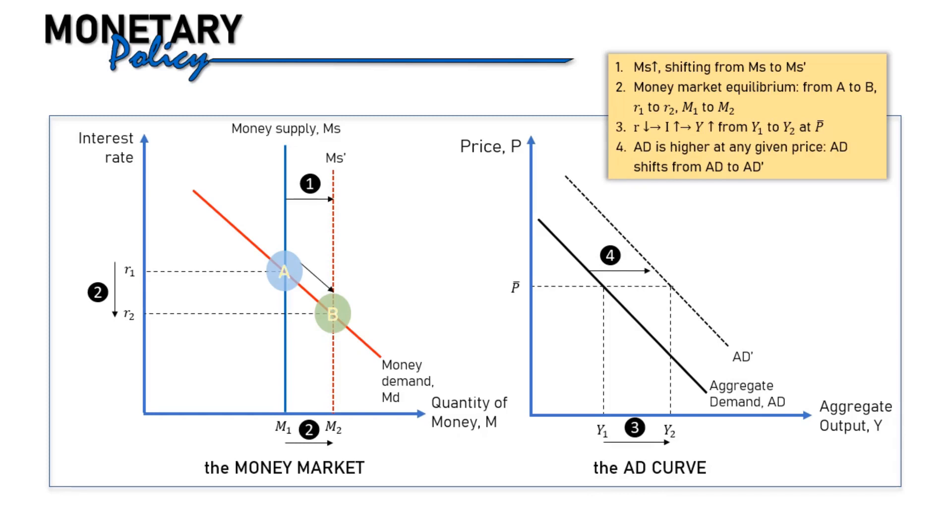The opposite will occur if monetary contraction is adopted. Money supply decreases. MS curve shifts to the left. Interest rate is now higher. Higher interest rate decreases AD at any given price level. AD shifts to the left.